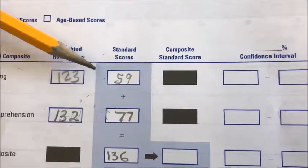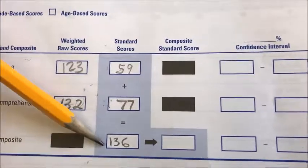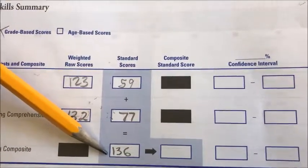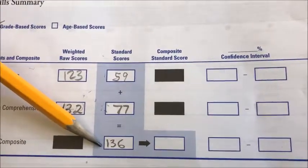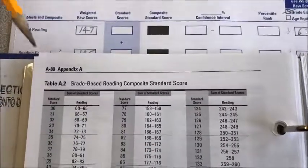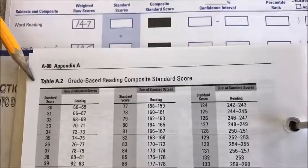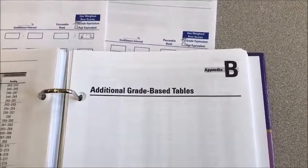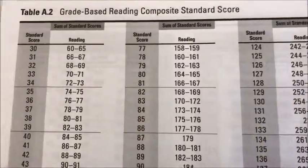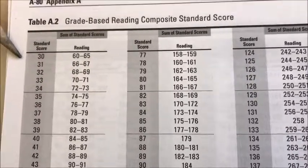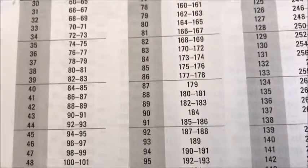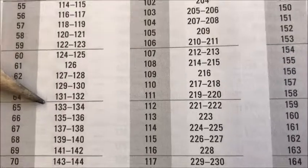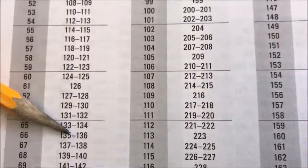Now we add the two standard scores: 59 plus 77, which gives us a total of 136. We then go to another table — appendix A, table A2, grade-based reading composite standard scores — to find the composite standard score. In that table, the standard score is in the gray column on the left and the composite scores are in the white area. We find 136 in the white columns, and the composite standard score is 66.